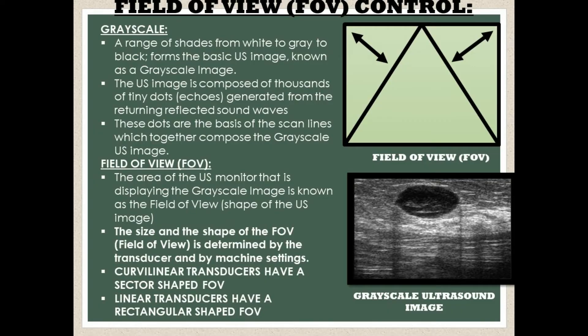Before we discuss the field of view ultrasound control, it's important to define grayscale. Grayscale is a range of shades from white to gray to black, and this forms the basic ultrasound image, known as a grayscale image. The ultrasound image is composed of thousands of tiny dots, known as echoes, that are generated from the returning reflected sound waves. These dots are the basis of the scan lines which together compose the grayscale ultrasound image.